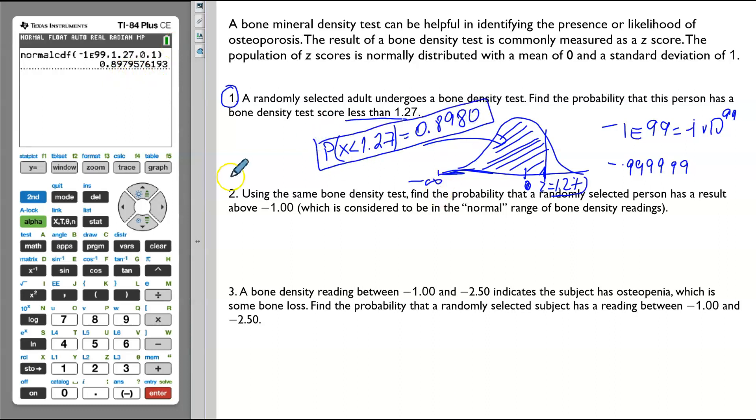Let's do the next part. Using the same bone density test, find the probability that a randomly selected person has a result above negative 1.00, which is considered to be the normal range of a bone density reading. Again, let's draw a diagram. It will help us visualize where the area that we are looking for is located.